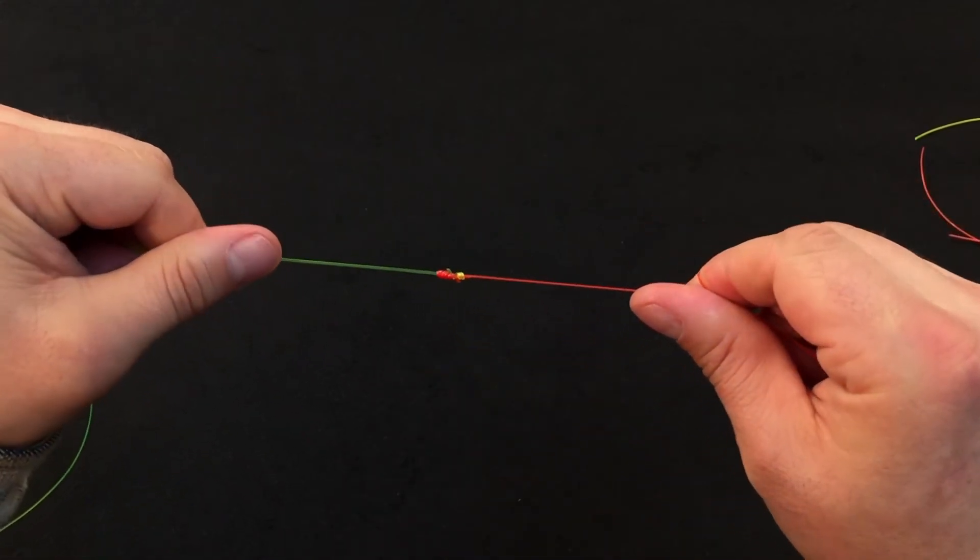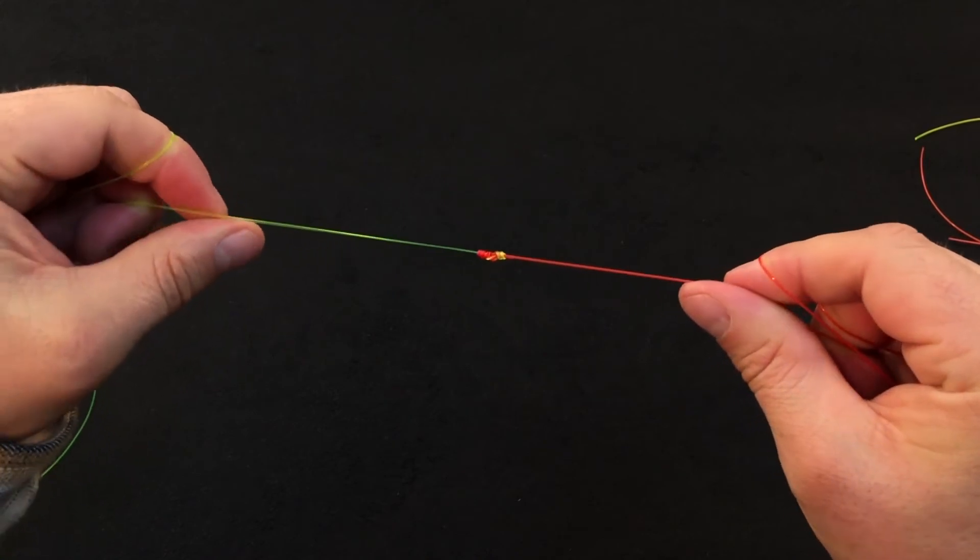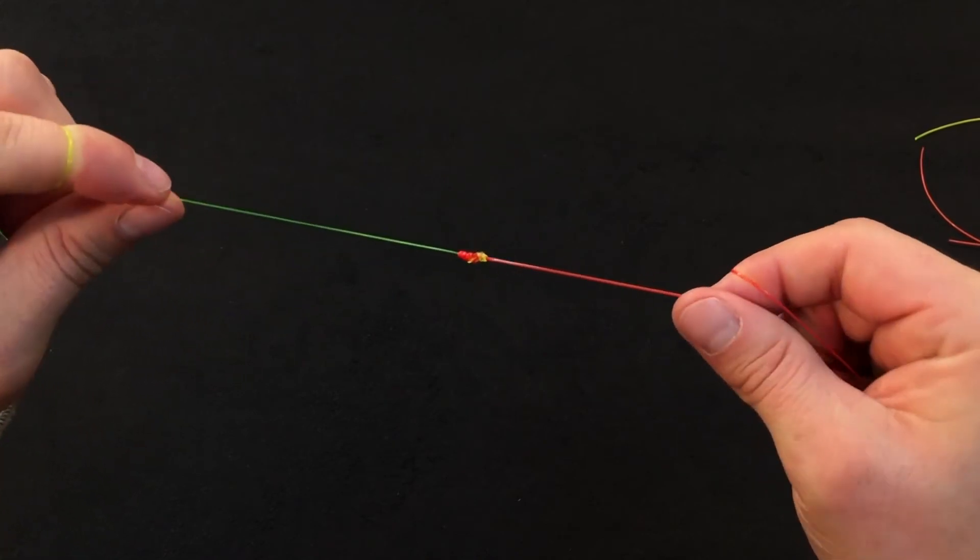So this is the finished improved blood knot. Like I said, it's one of my favorites for connecting two dissimilar sizes of material.